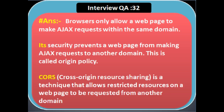When Web API is hosted and another application on a different domain tries to access the Web API through a request, we need to enable CORS — Cross-Origin Resource Sharing. Browsers only allow a web page to make requests within the same domain. This security prevents a web page from making requests to another domain — this is called the same-origin policy. CORS is a technique that allows a restricted resource on a web page to be requested from another domain.